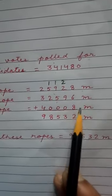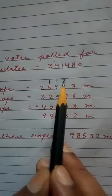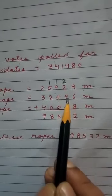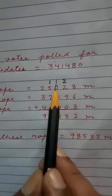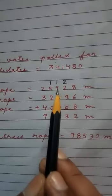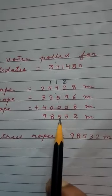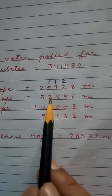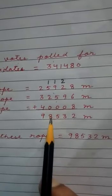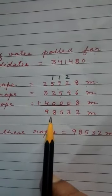So 8 plus 6, 14, 14 plus 8, 22, 2 write here and 2 here. So 2 plus 2, 4, 4 plus 9, 13, 13 plus 0, 13, 3 you write here and 1 here. So 1 plus 9, 10, 10 plus 5, 15, 15 plus 0, 15. So 5 write here and 1 here. So 1 plus 5, 6, 6 plus 2, 8, 8 plus 0, 8.